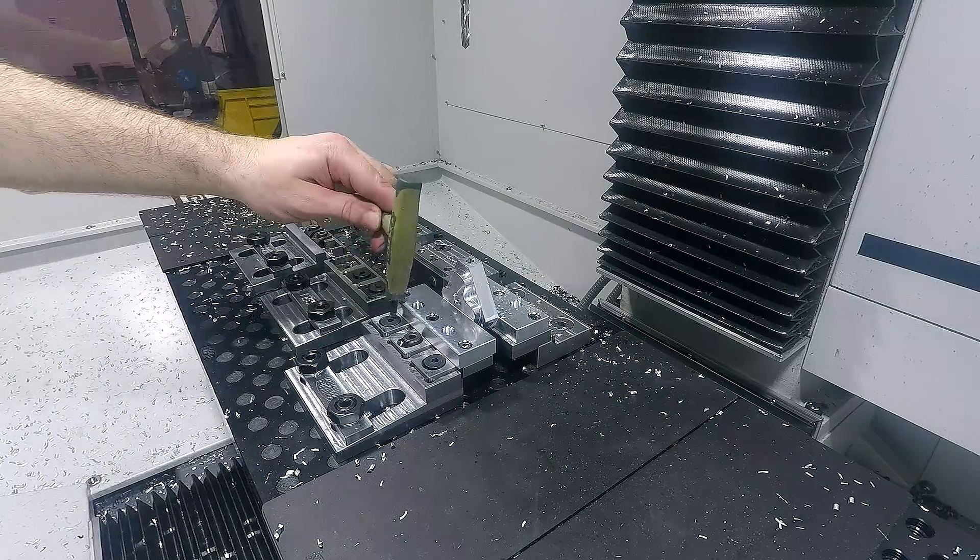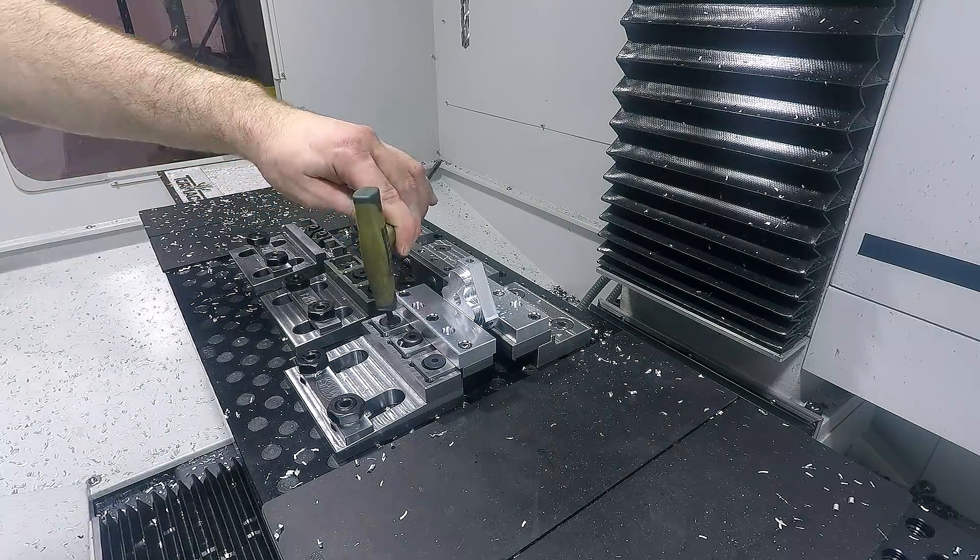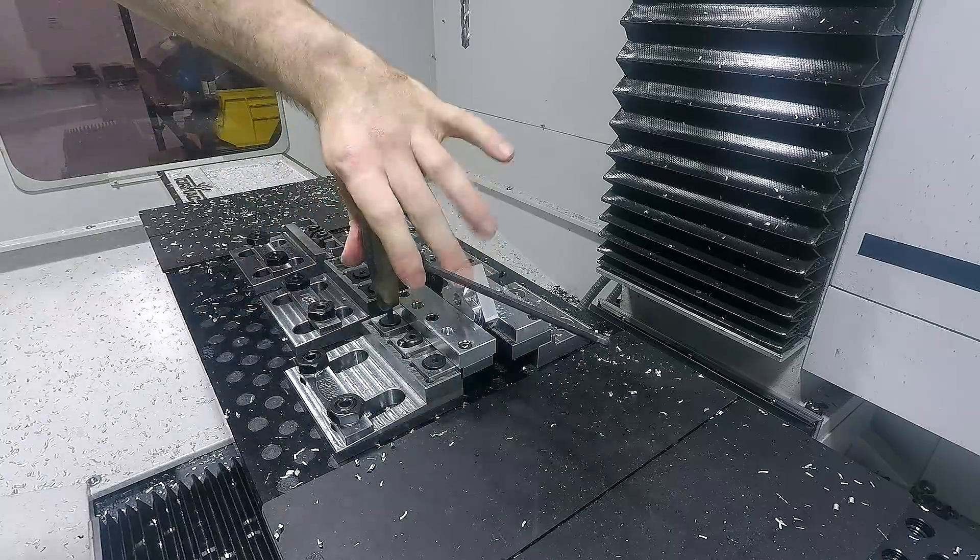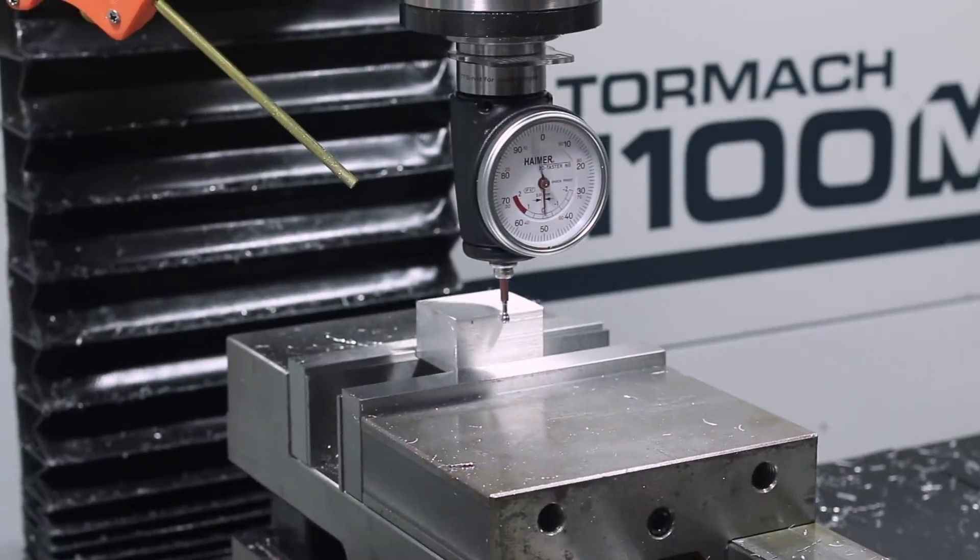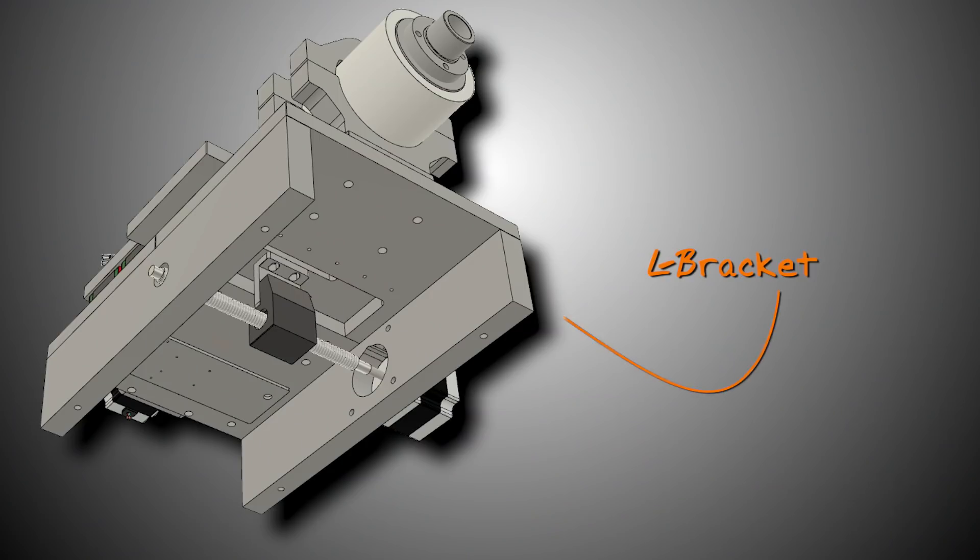I probably could have saved a minute or so by throwing a vise stop on here rather than re-indicating X every time, but not the end of the world. Next up is what I'm calling the L bracket. This goes between the X cross slide plate and the X ball nut housing.